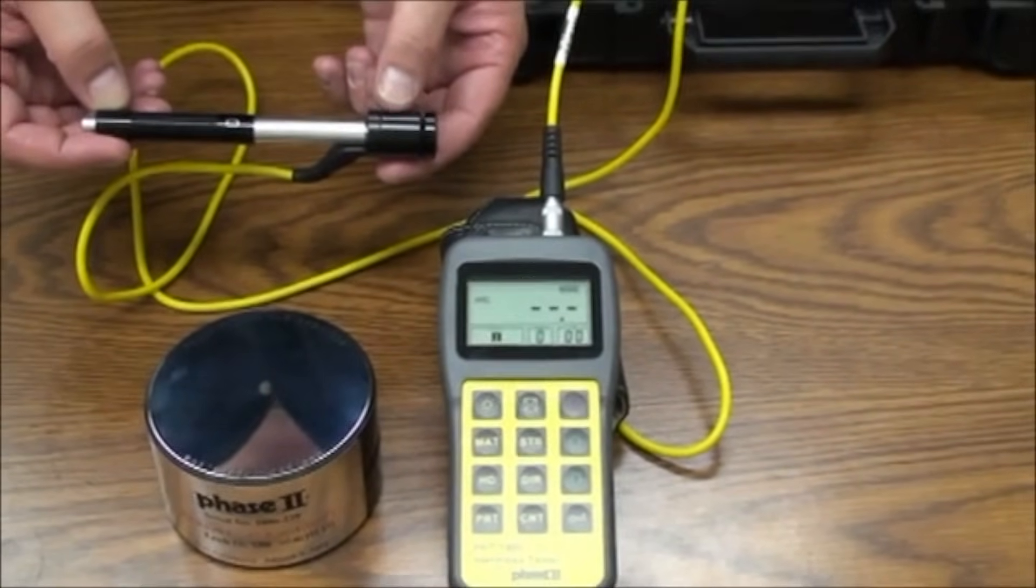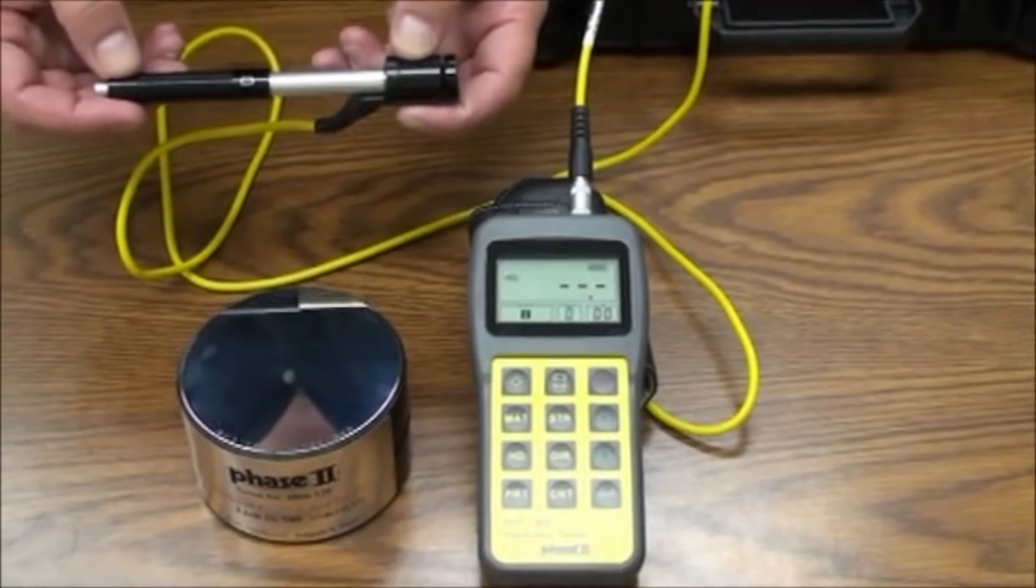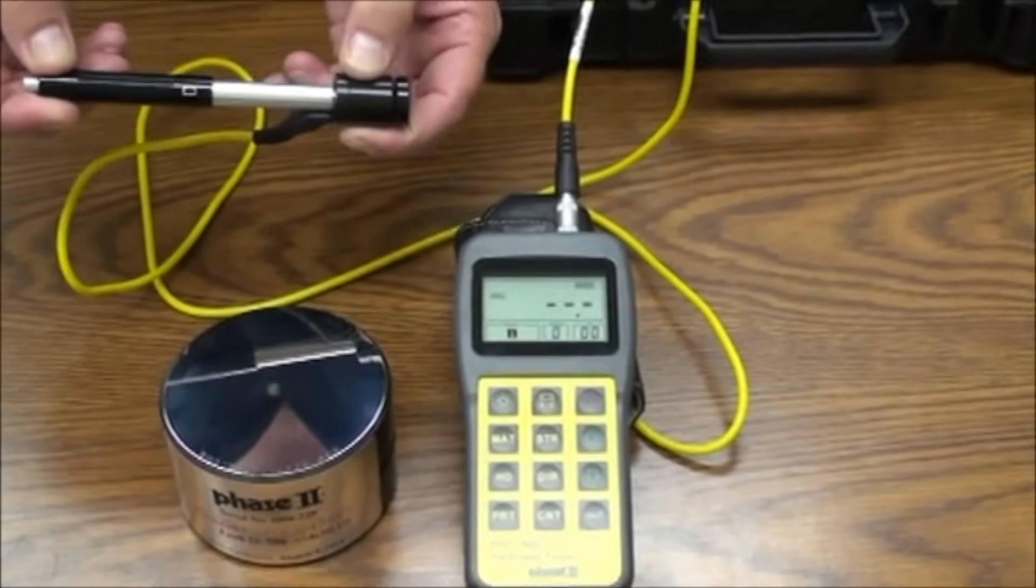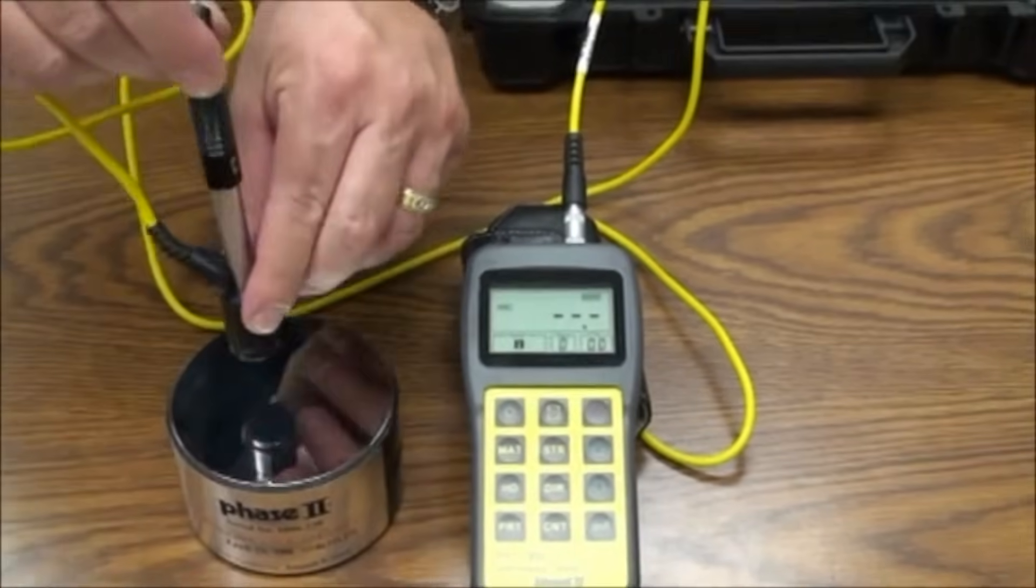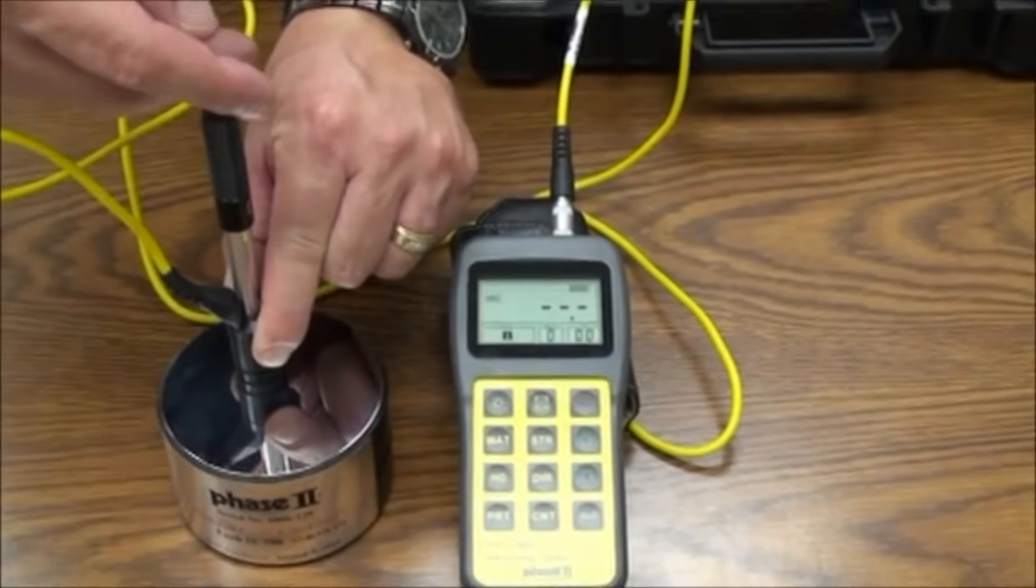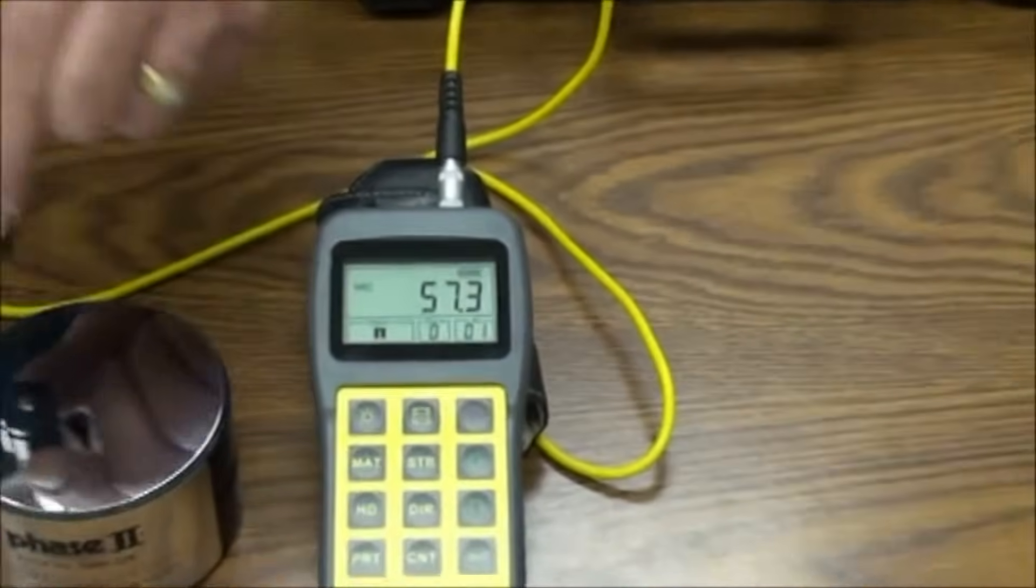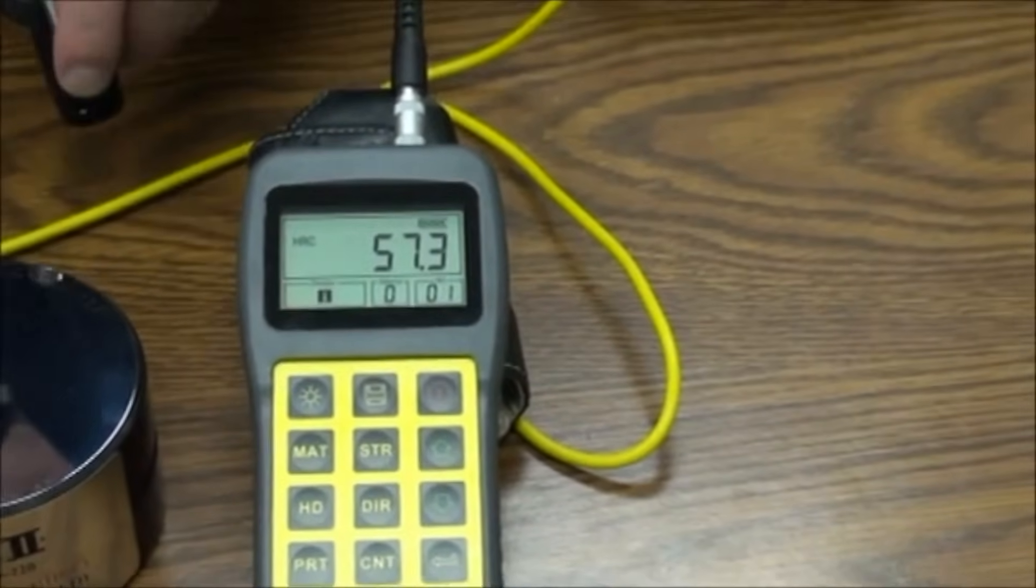Taking a test or a series of tests is quite simple once your parameters are all set. Load the impact device just like you would load a pump action shotgun. Place the end of the impact device flat on your workpiece and release the load by depressing the top button. You will see the results shown on screen.